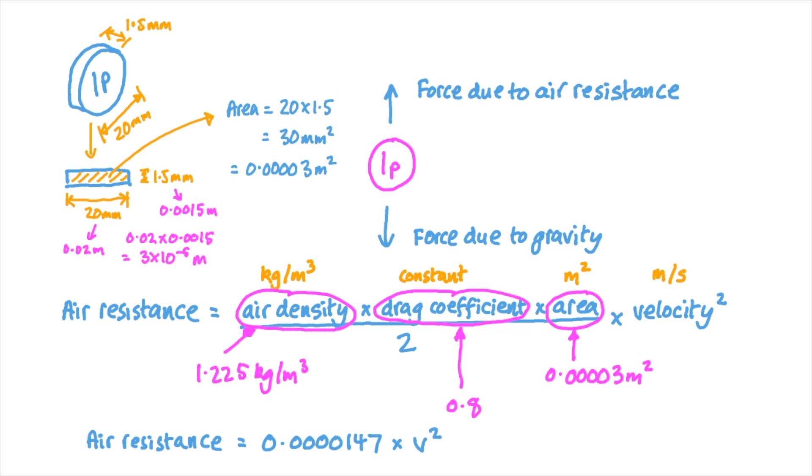When we write that out, we get that the air resistance is equal to 0.0000147 times the square of the velocity. Since the coin was only falling for a couple of seconds, it didn't reach a very high velocity and the air resistance would be pretty small. But as the velocity increases, the air resistance increases, and there'll come a point at which it balances the gravitational force and the penny will just keep falling at that velocity with no more acceleration. That's called the terminal velocity.